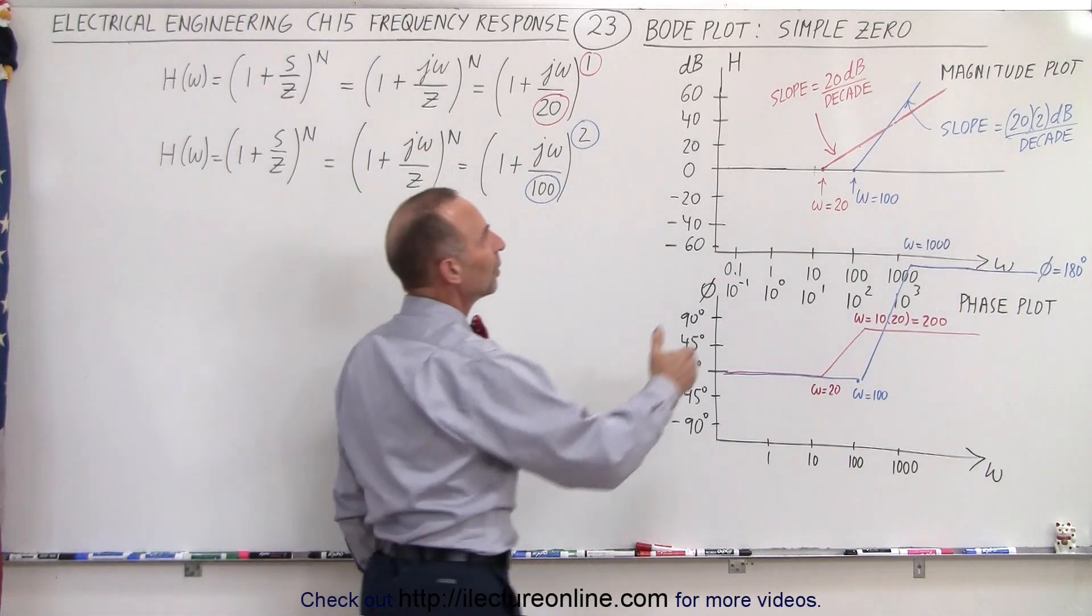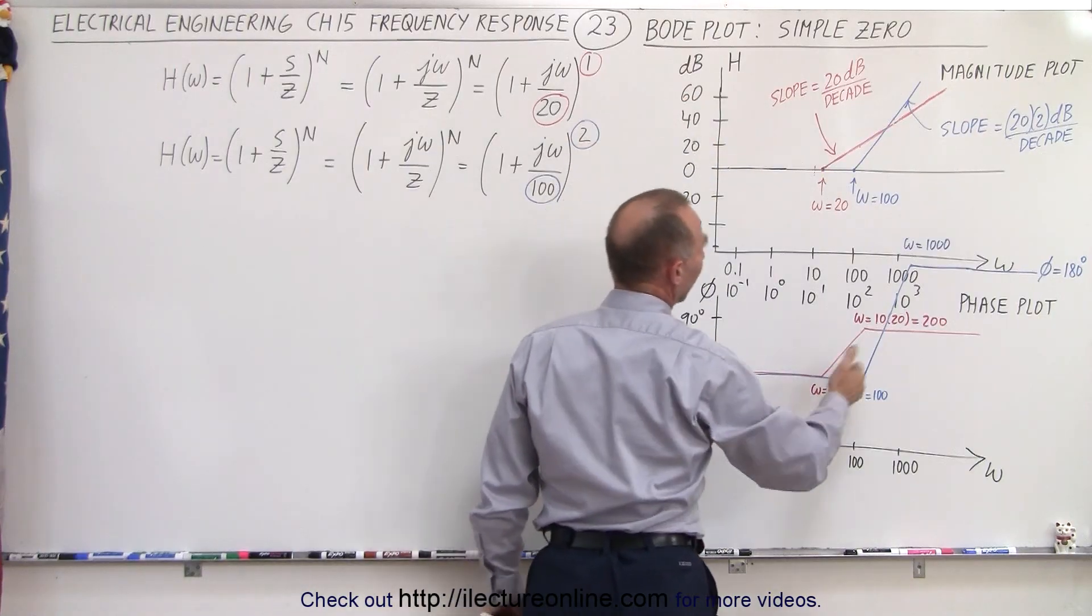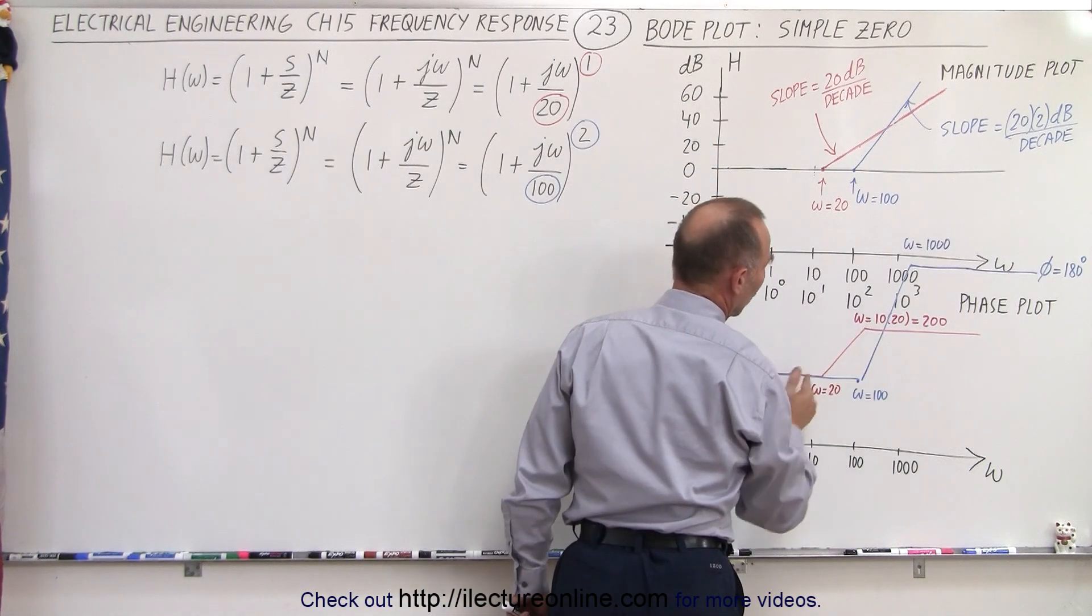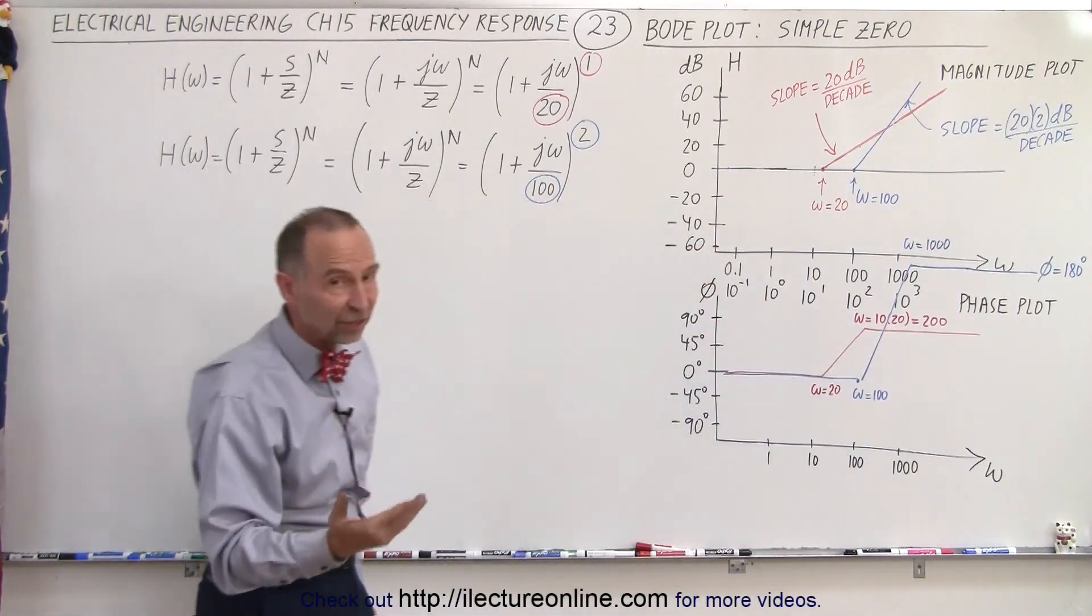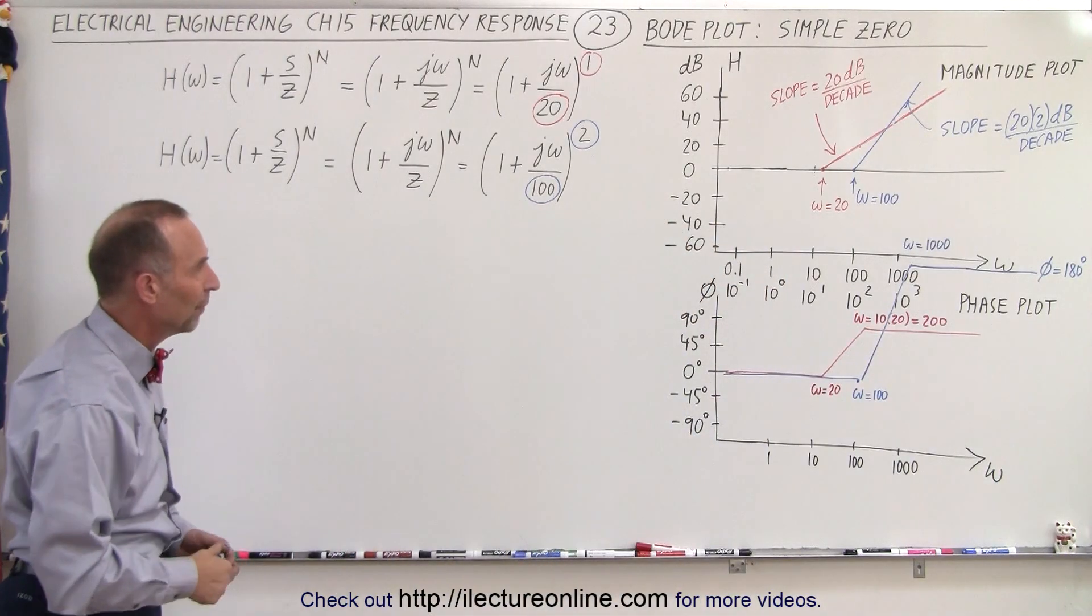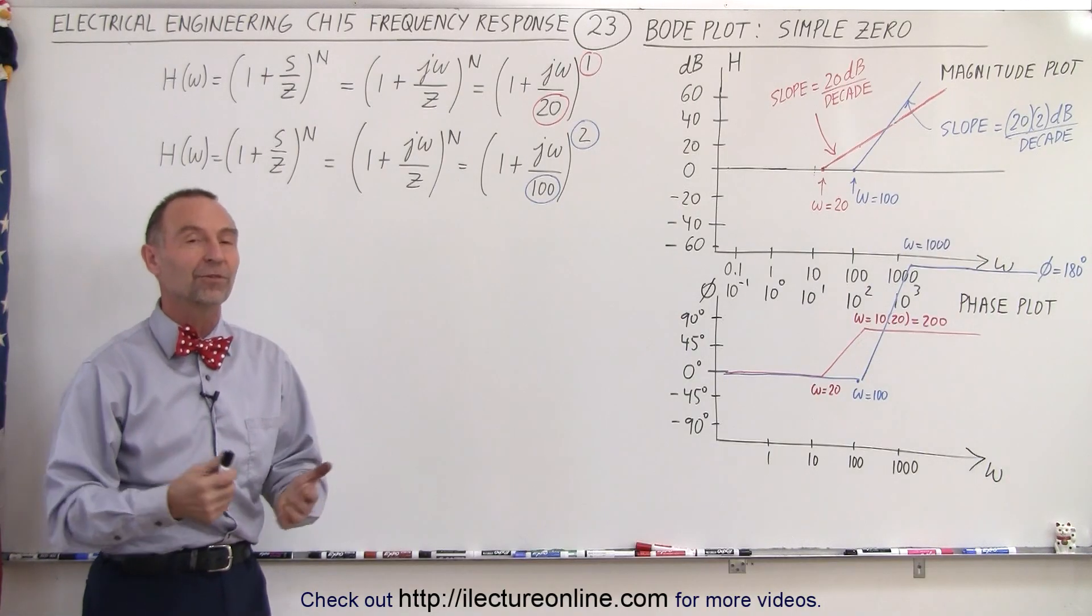So you can see how the slope in the magnitude is affected by the number of zeros that we have and the phase angle difference, where it starts and where it ends, and the amount of the change depending upon if you have a single zero or a double zero. And that is how we draw the Bode plot for simple zeros.